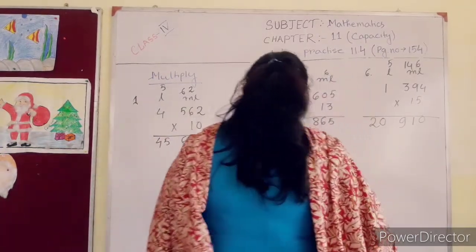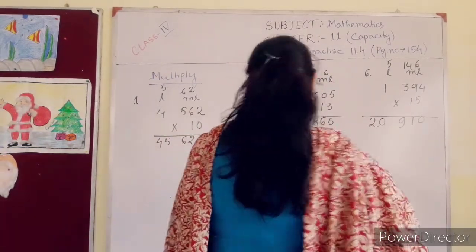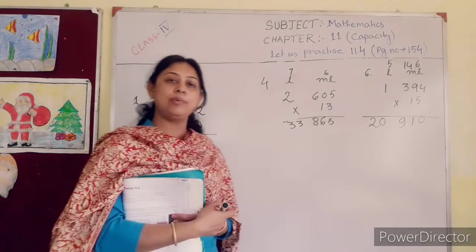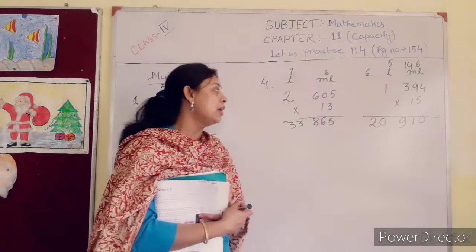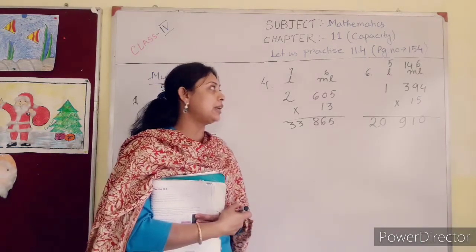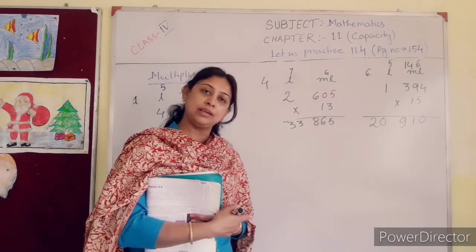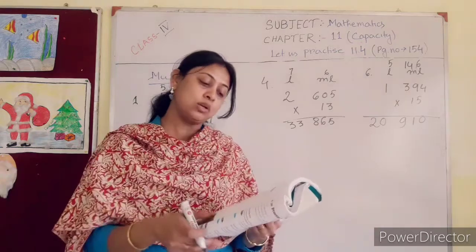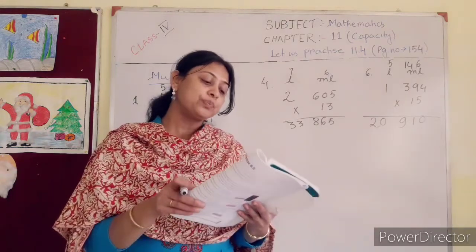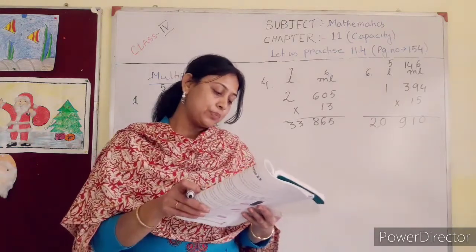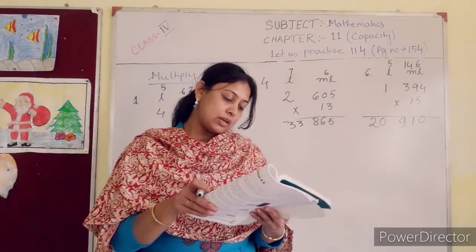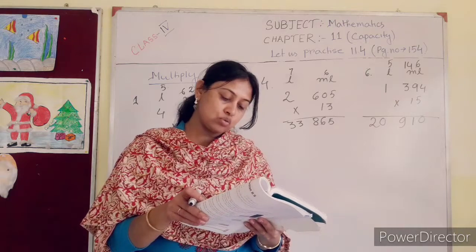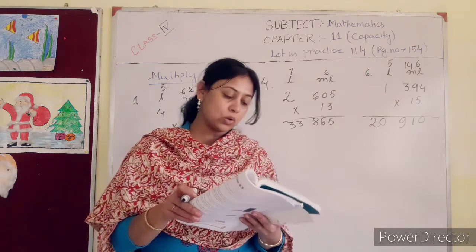So your answer will be 20 liter, 910 milliliter. 1 to 6 you will do in your book. 7 to 12 you will solve in your copy.